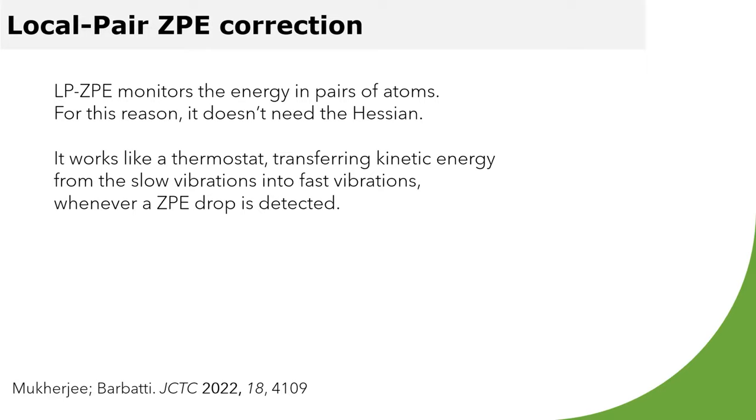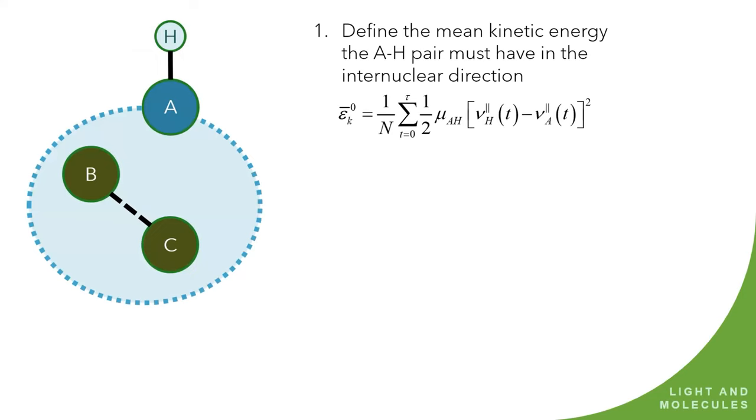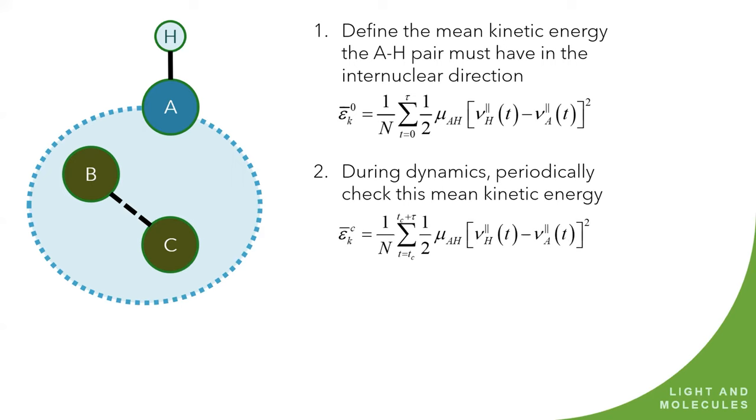Recently, Mukherjee and I proposed the local pair ZPE correction that works monitoring pairs of atoms. And because of that, it doesn't require any Hessian. It works like a thermostat. It transfers kinetic energy from the slow vibrational modes to fast vibrational modes every time that you have a drop in ZPE. And it conserves energy, momentum, angular momentum. So it's simple.